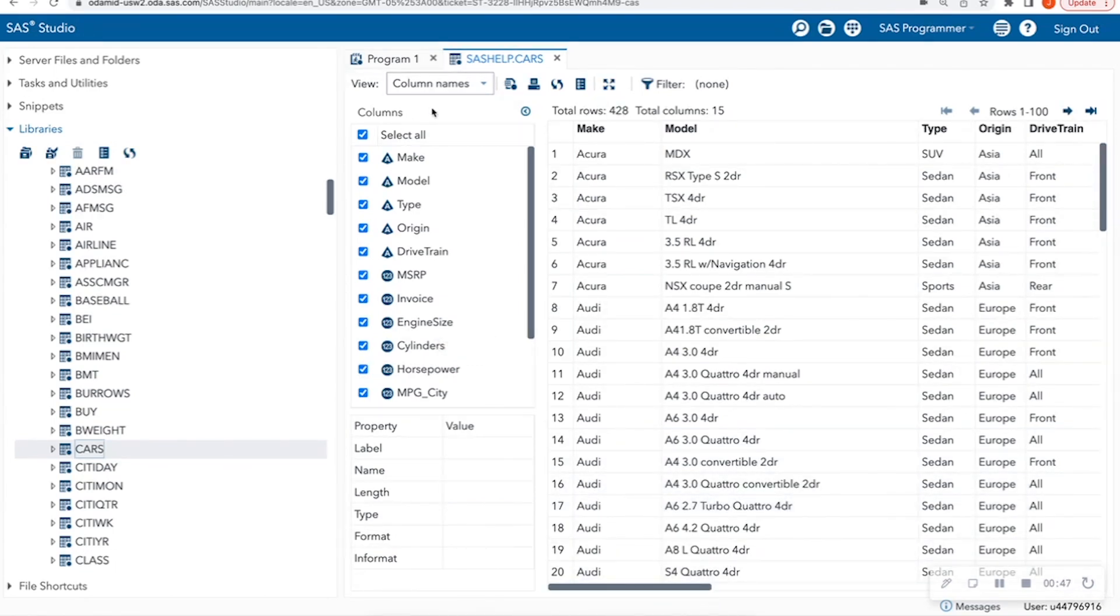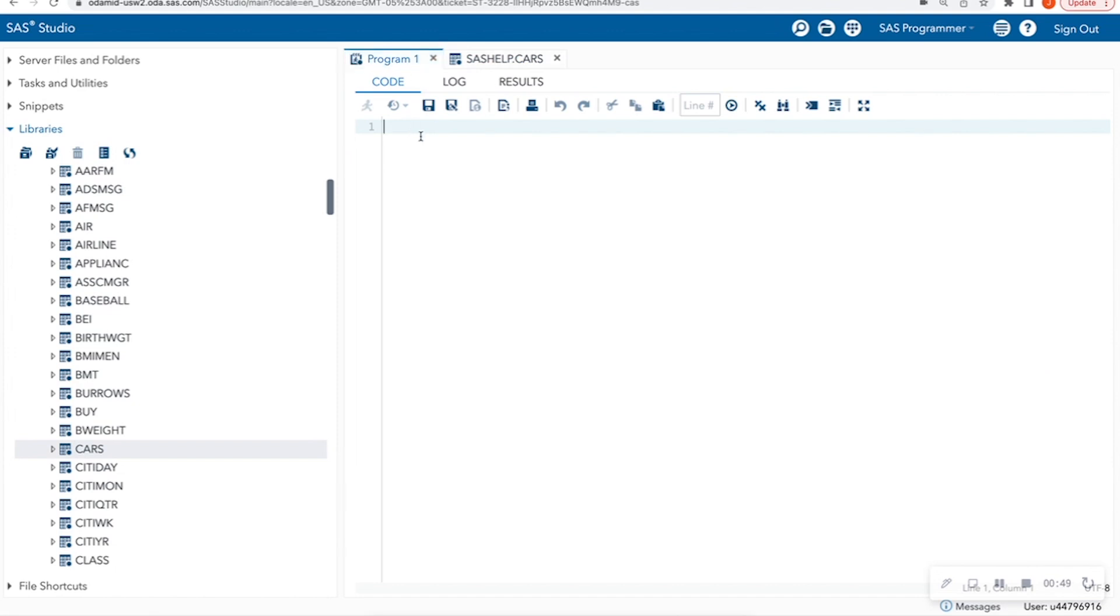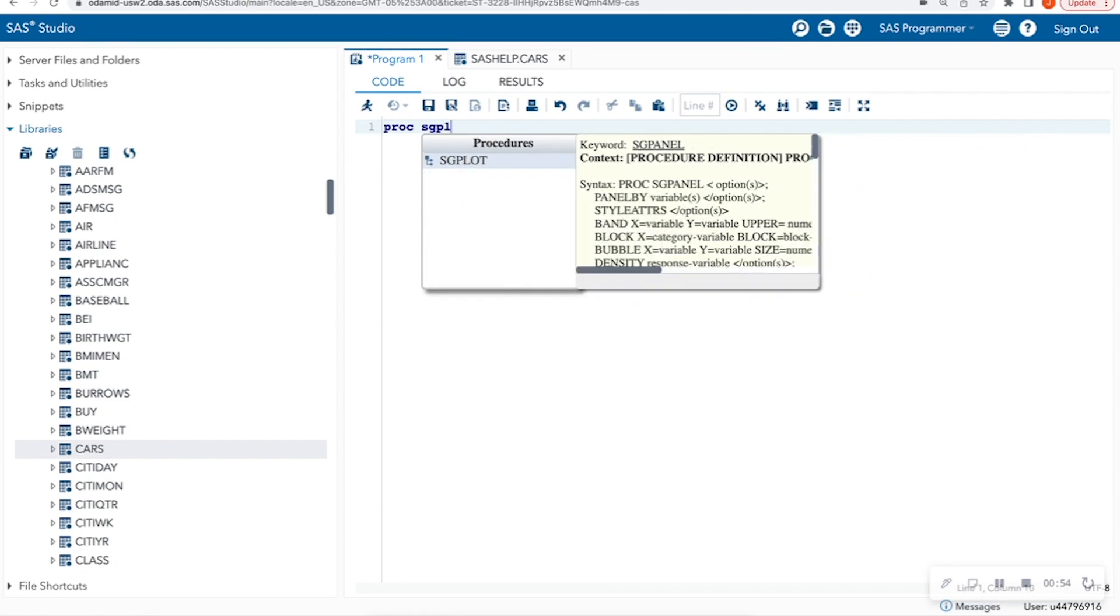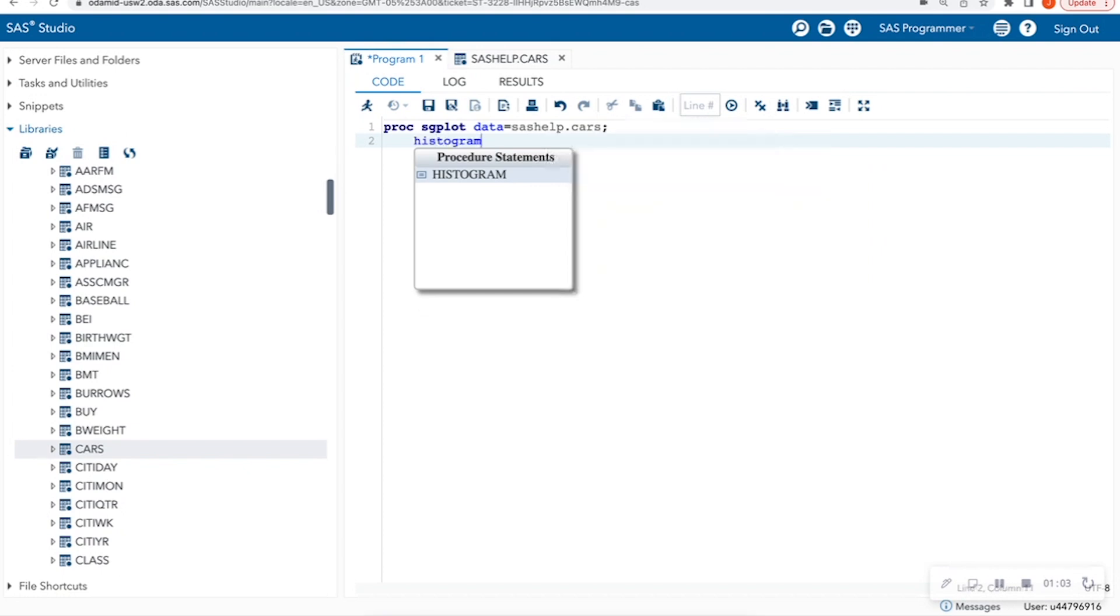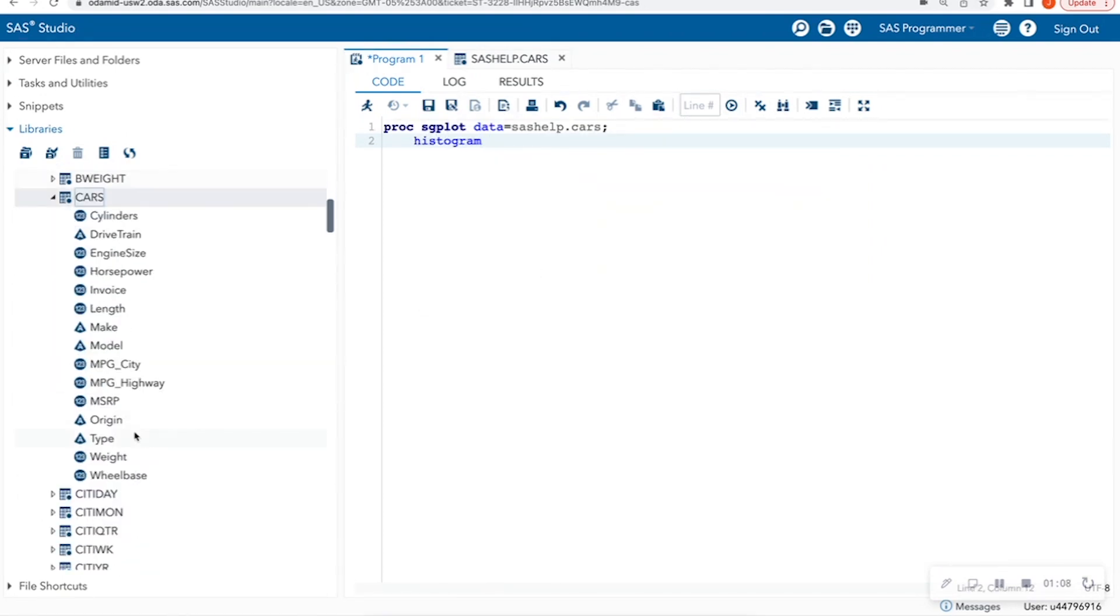So let's go back to this first program and let's type up a histogram. So I'm going to do proc sgplot. And we're going to do data. The dataset is in our SAS help library with the CARS dataset. We are going to do histogram. And I think I want to do a histogram this time of horsepower. So I am just going to put horsepower here. And I'm going to run this.